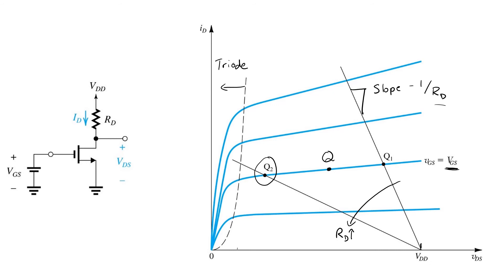Now, clearly, the swing available at the output node is much less in this case. As soon as the output voltage drops down by a small amount, the transistor will enter triode and will cease to operate like a linear amplifier. But the larger value of RD